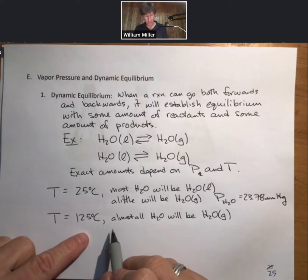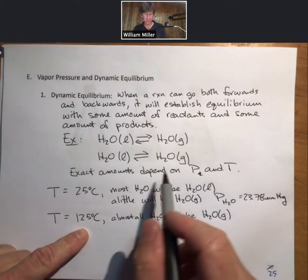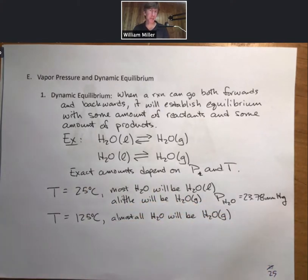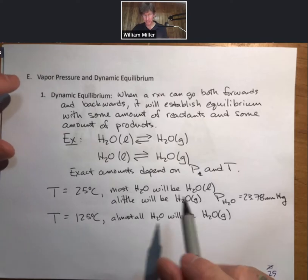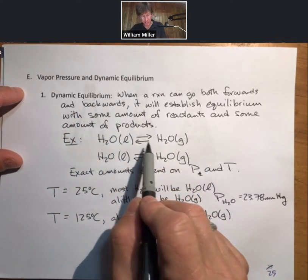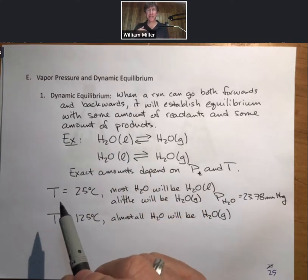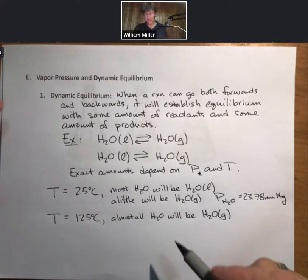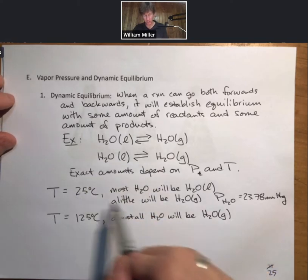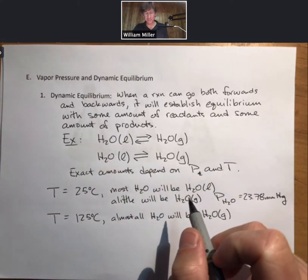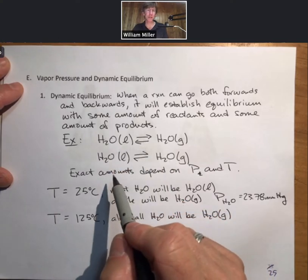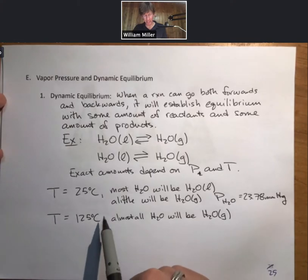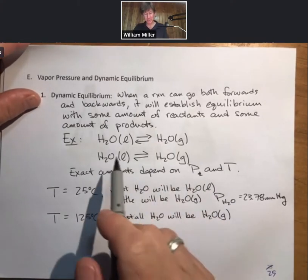If you take water vapor at 125 degrees Celsius and cool it down, you can make H2O liquid — evidence that this reaction goes both ways. Equilibrium means there is some established amount of reactants and products and the reaction appears to stop changing. The dynamic nature means that even at equilibrium both reactions are occurring, just at the same rate.